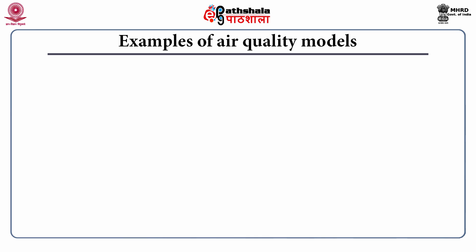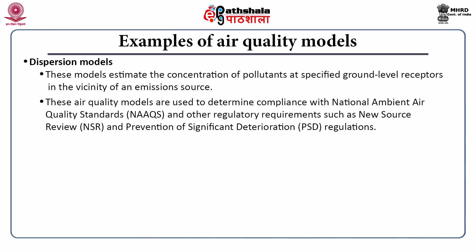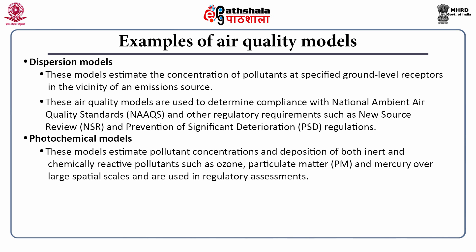Let us start with the example of air quality models — the dispersion model. These models estimate the concentration of pollutants at specified ground level receptors in the vicinity of emission sources. These air quality models are used to determine compliance with national ambient air quality standards known as NAAQS, and other regulatory requirements such as new source review known as NSR and prevention of significant deterioration known as PSD regulation. The other type is photochemical models, which estimate pollutant concentration and deposition of both inert and chemically reactive pollutants such as ozone, particulate matter known as PM, and mercury, over large spatial scales.